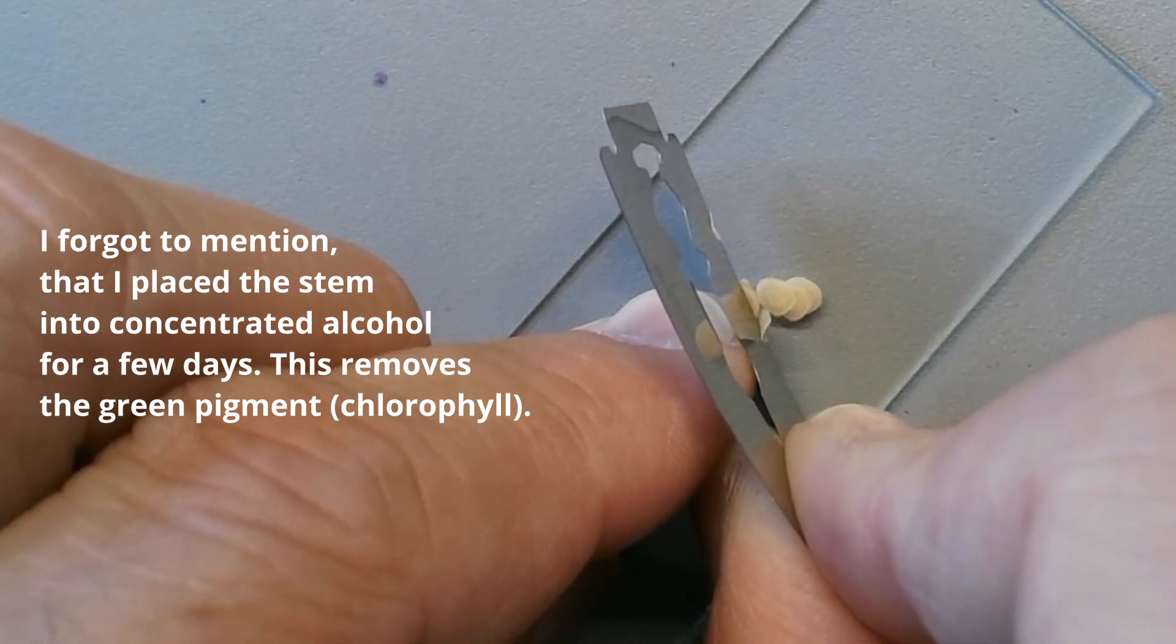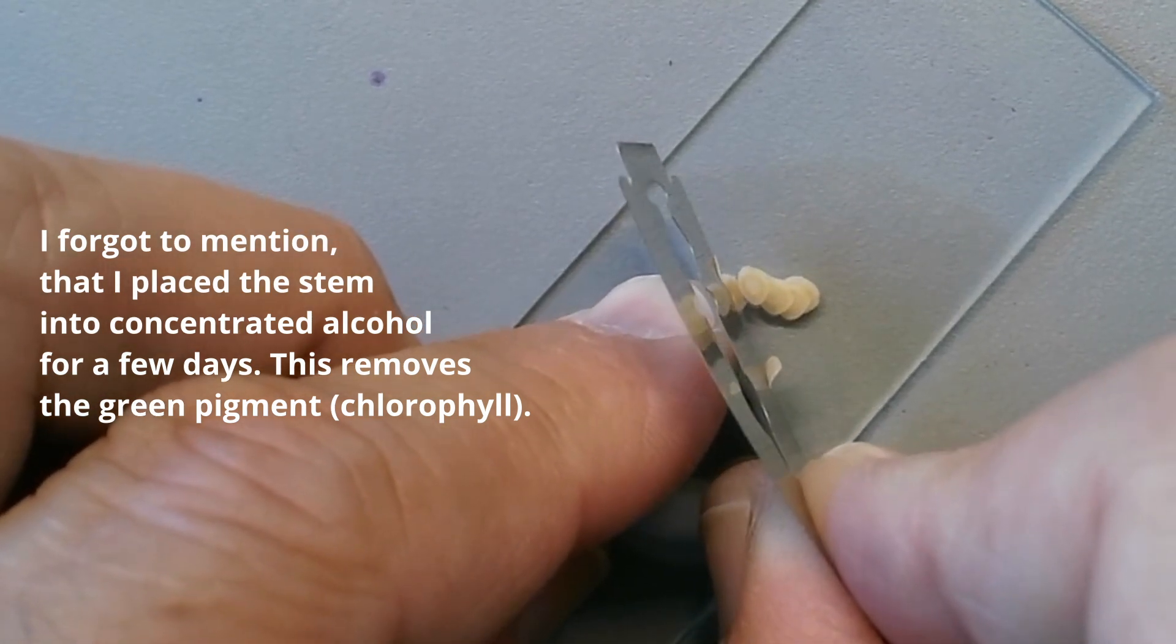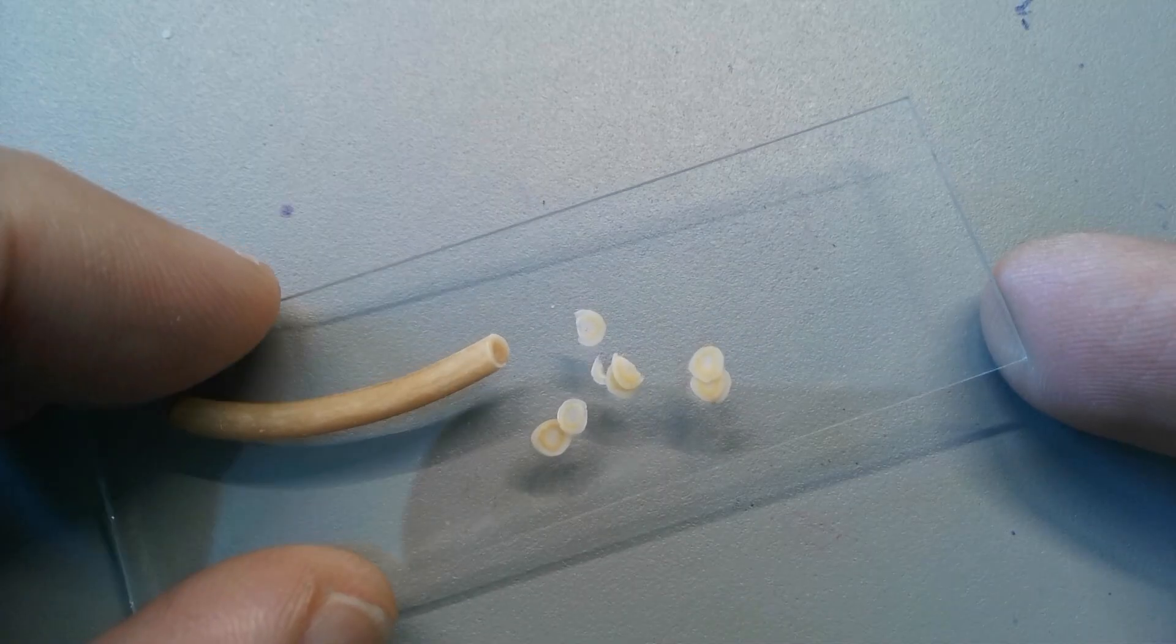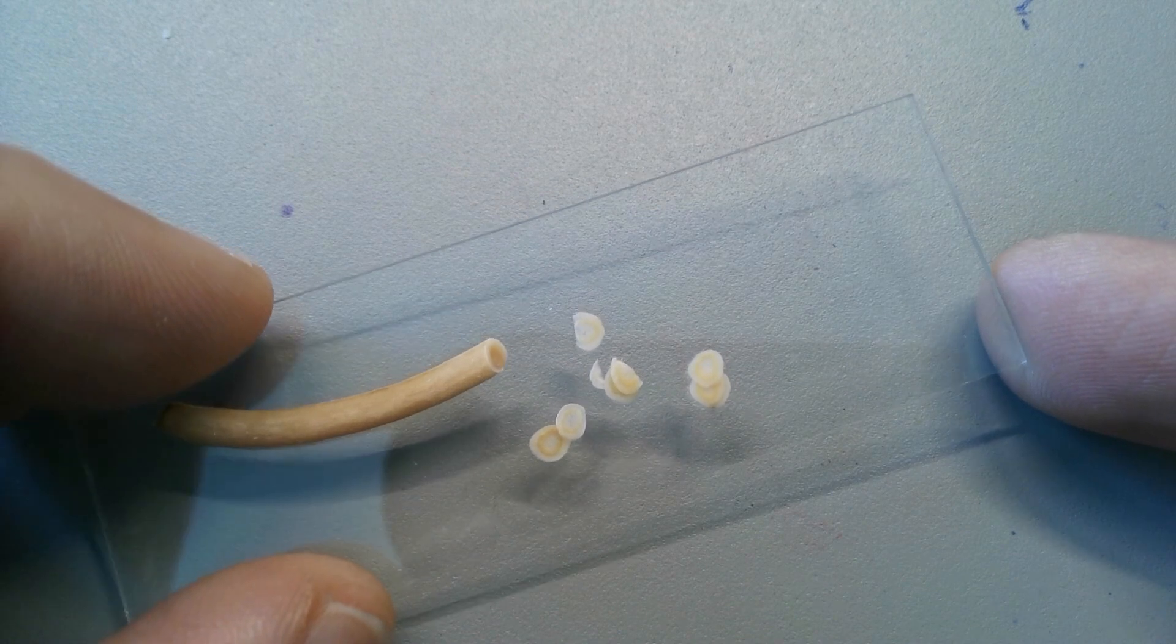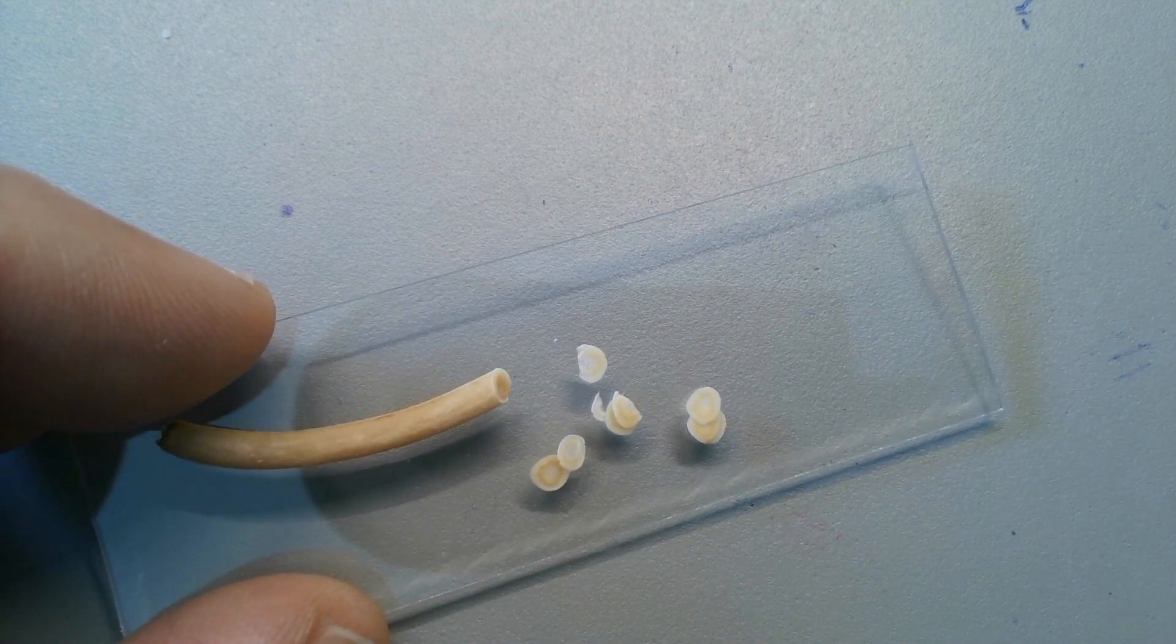So essentially, I tried it by hand. I used a very fresh and sharp razor blade and simply made a lot of slices. Quantity is the secret here because some slices are going to be thicker, some are going to be thinner. And the more you make, the higher the chance, of course, that you're going to have a very thin slice—one that's maybe around a cell layer in thickness.